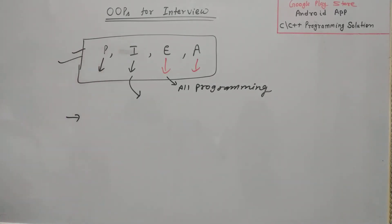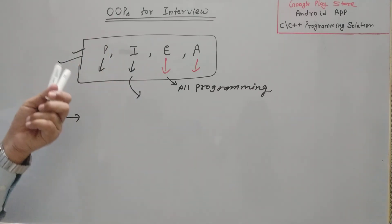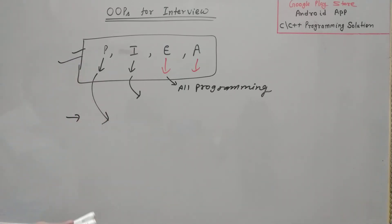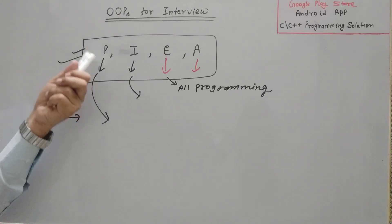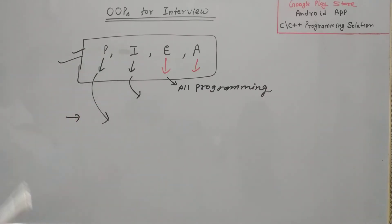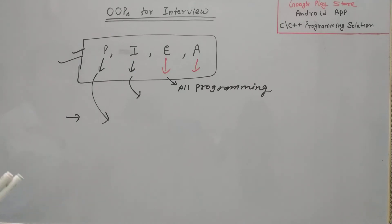First of all, I will cover these four basic properties of object-oriented programming, which are common for all programming languages. After that, I will cover the properties inside them — how we can achieve polymorphism with the help of examples. When you are facing the interview, they will ask for some definitions. Some companies ask only the definition; some companies say 'please write a program' or 'how can we achieve polymorphism or inheritance,' and we have to write a pseudo code or simple logic. I will explain each of them one by one with examples.